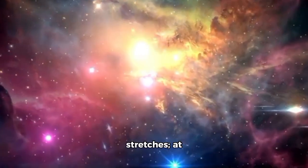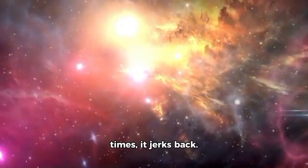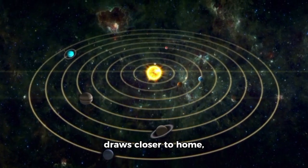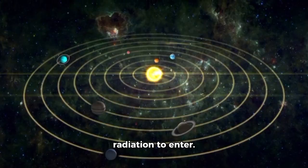At times, it stretches, at times, it jerks back. And if the solar wind weakens, the boundary draws closer to home, allowing more galactic radiation to enter.